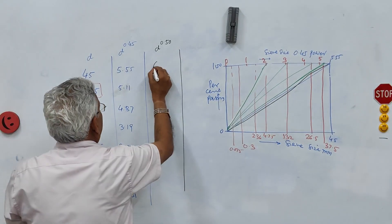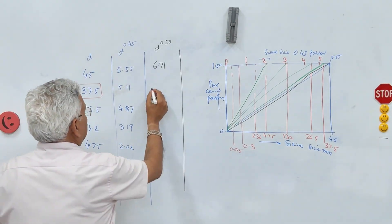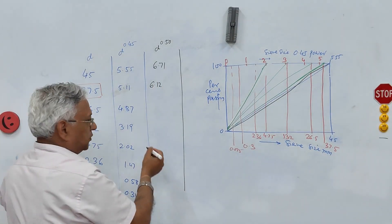Now this will be 6.71 now, 6.12 and so on all values.